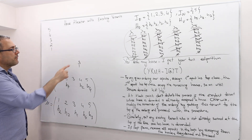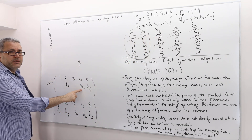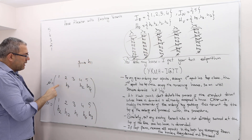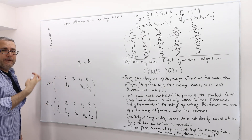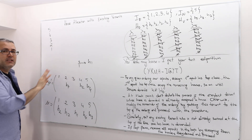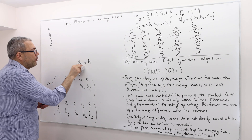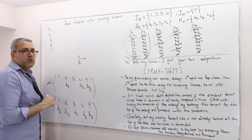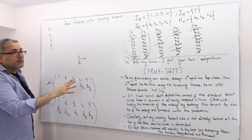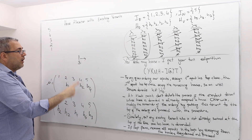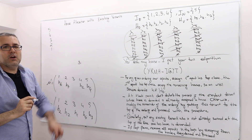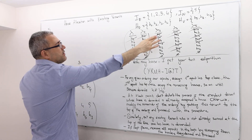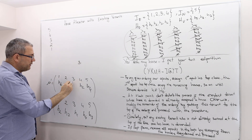Finally, agent 3 says house 2, but house 2 is no longer available. He then says H1, but H1 is still occupied because agent 1 hasn't been served yet. So we put agent 1 on top of agent 3. The new list is 1, 3. Agent 1 is asked again: house 2 is not available, so he says house 6 — it's vacant, so agent 1 gets house 6. Then agent 3 is asked: H2 is not available, but H1 is now available, so agent 3 gets H1.